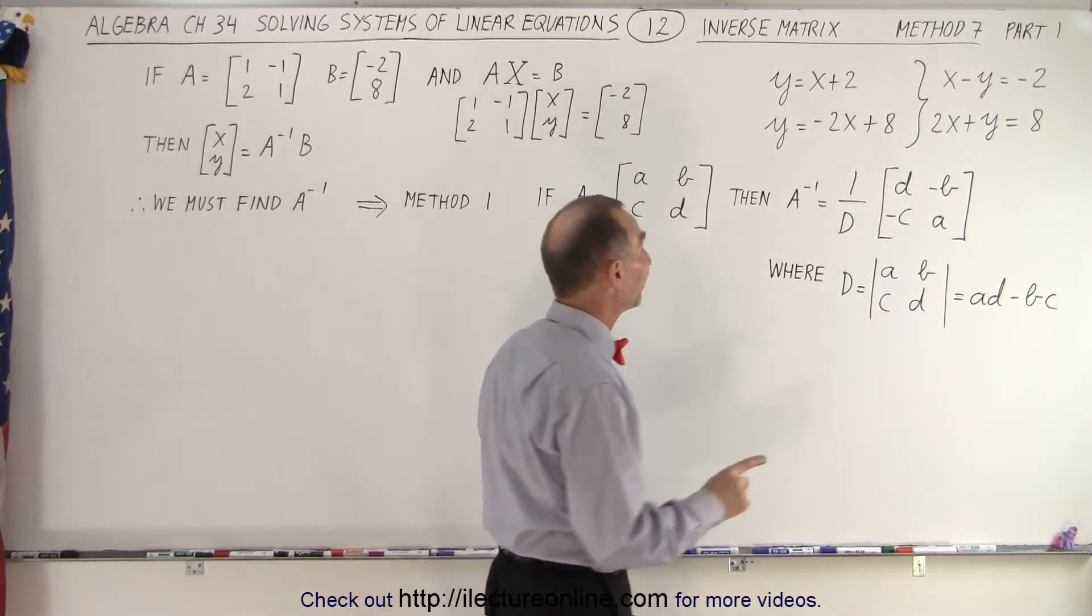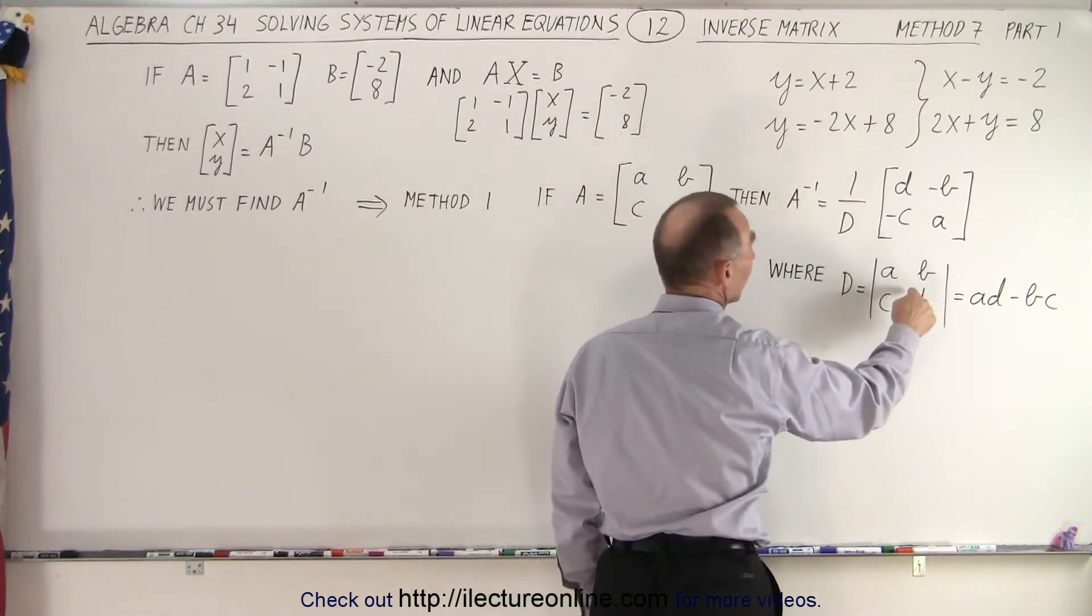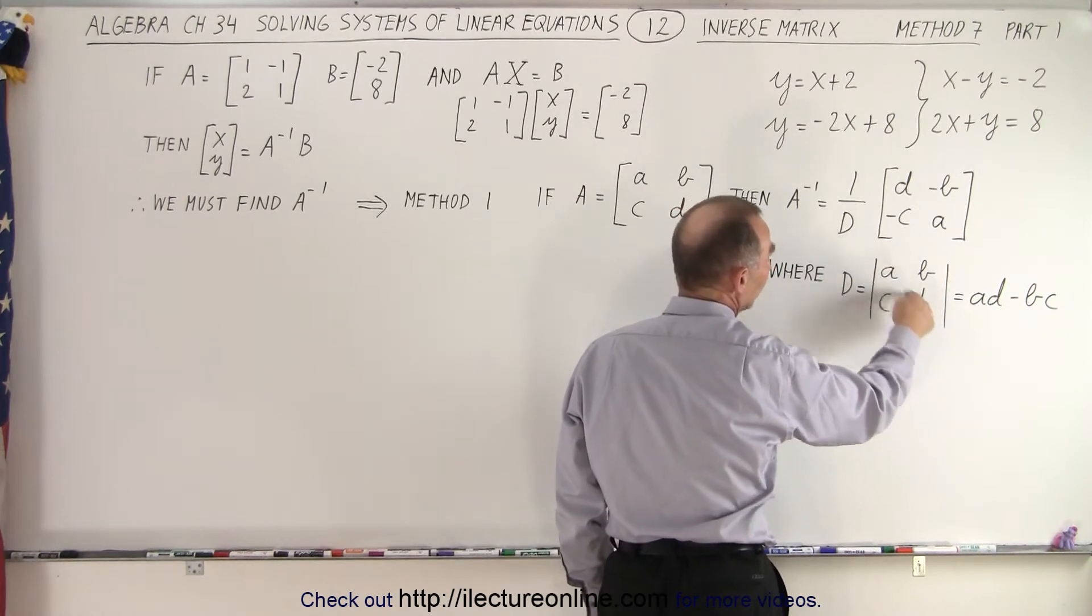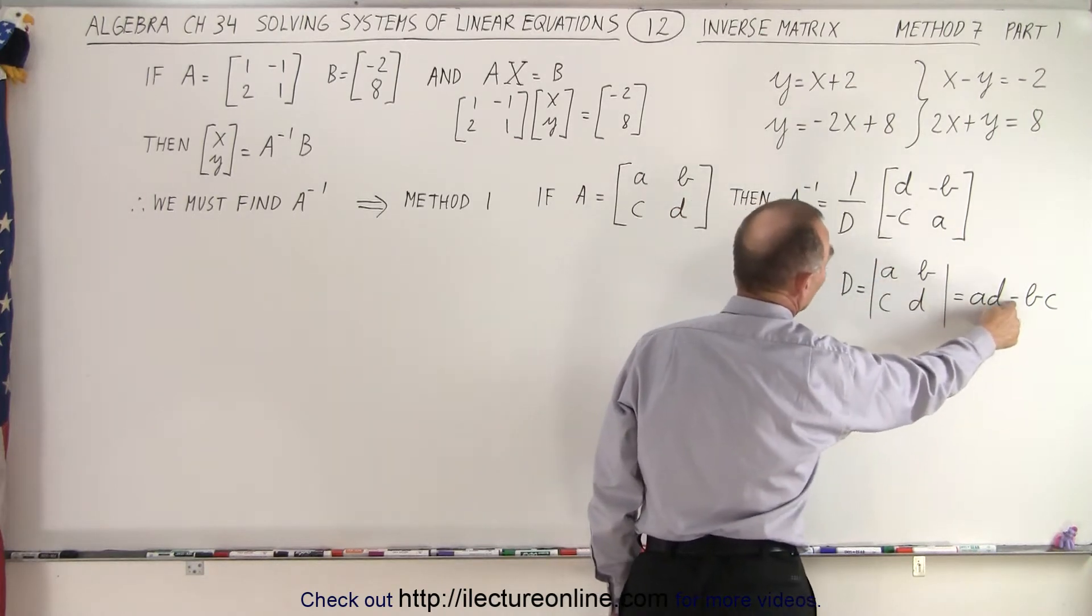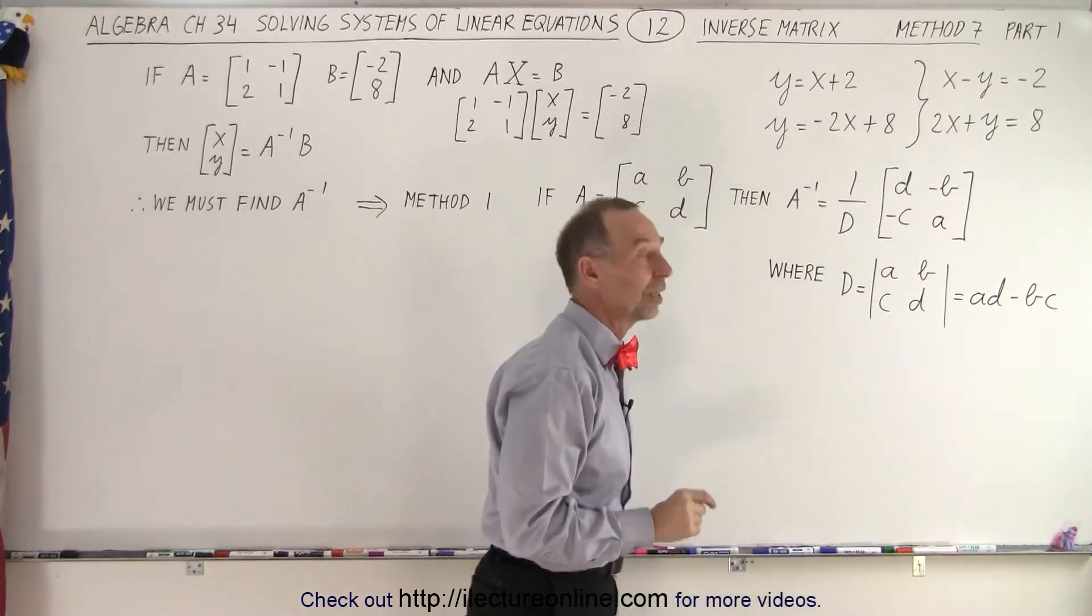And the determinant is simply these elements, A, B, C, and D, in such a way that when we multiply these two together, A times D, and we subtract the multiplication of those two together, B times C, we get the determinant.